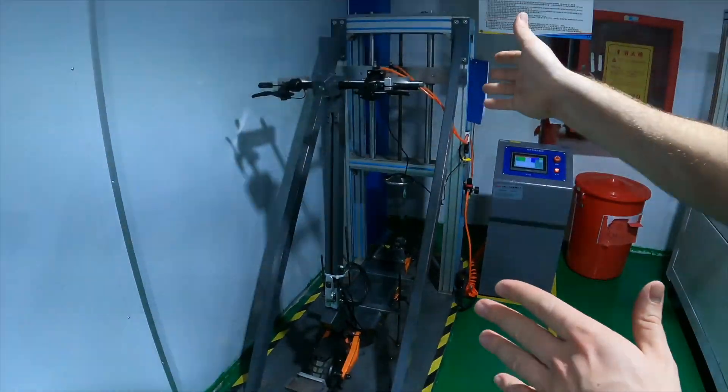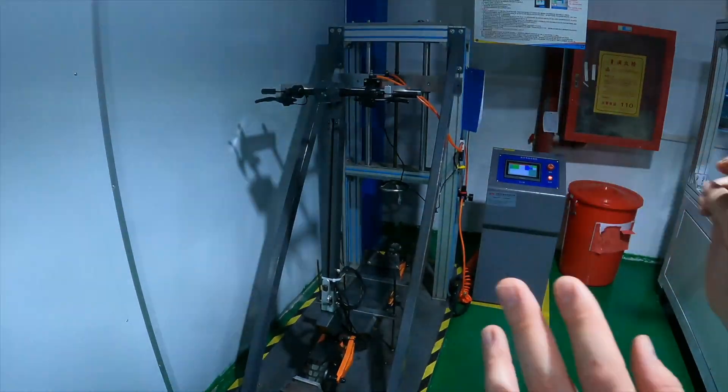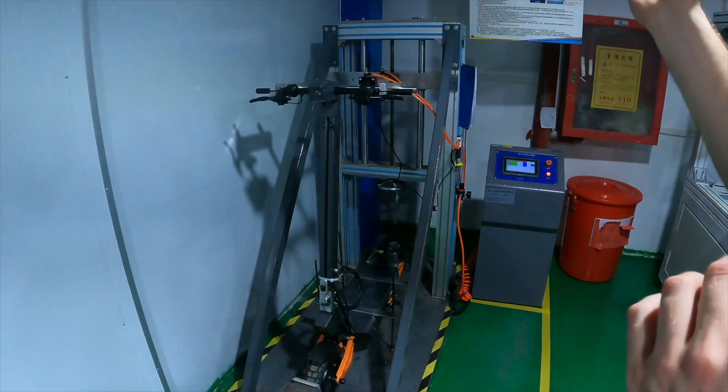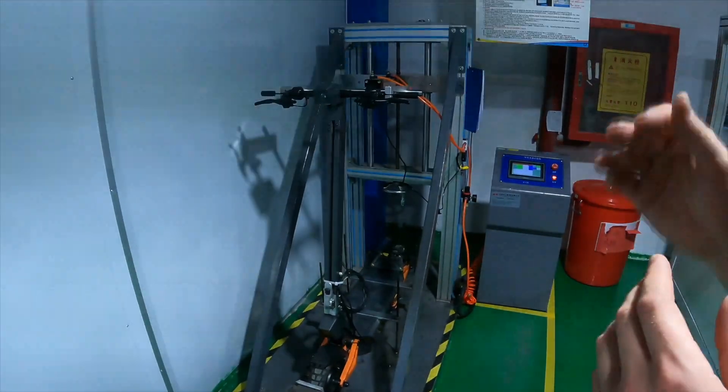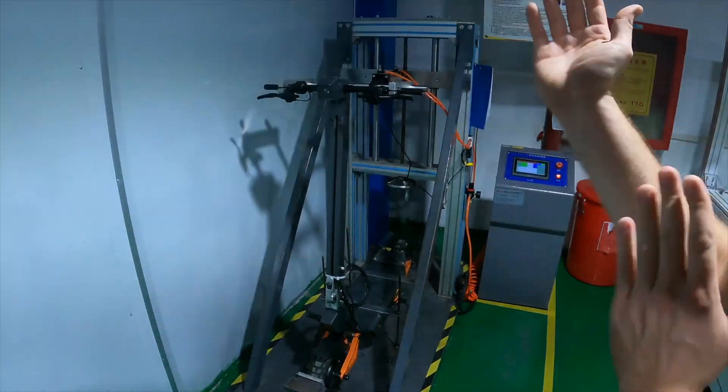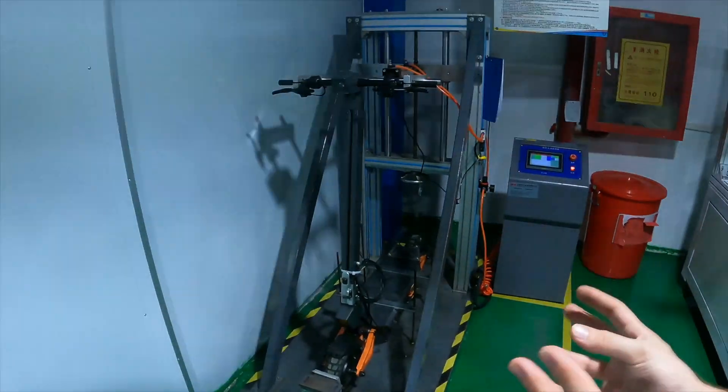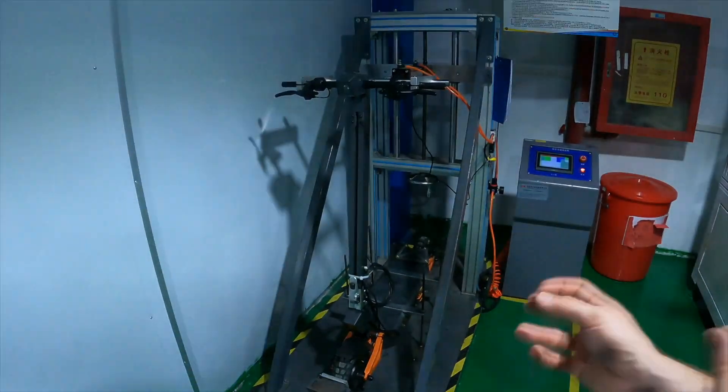So this one is pushing 50 kilograms and it's going to do 100,000 repetitions. For comparison, on our scooters, the Apollo scooters, we are pushing 80 kilograms and we are doing 300,000 cycles. And we are not just pushing, we are pushing and pulling to really stress test the direction tube, the stem, and the folding mechanism.